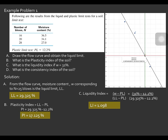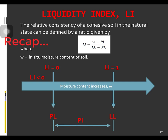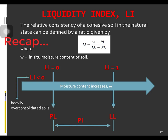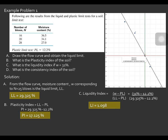Going back to the definition of the liquidity index: for a liquidity index less than 0, the moisture content is less than or equal to the plastic limit, and these soil deposits are heavily consolidated. The liquidity index may be equal to or greater than 1 for sensitive clays. Since our liquidity index is 1.098, which is greater than 1, our soil is a sensitive clay.